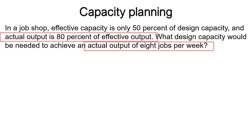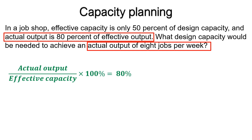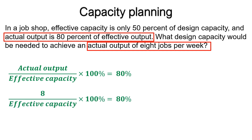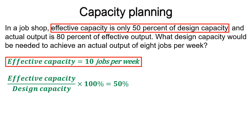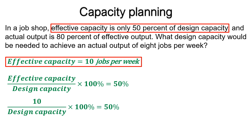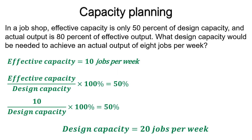We start with the relationship between actual output and effective capacity. The actual output divided by effective capacity, multiplied by 100, equals 80%. Substituting the actual output of 8 and solving gives an effective capacity equal to 10 jobs per week. Now, using the relationship between effective and design capacity: effective capacity divided by design capacity, multiplied by 100, equals 50%. Substituting the effective capacity of 10 and solving gives a design capacity equal to 20 jobs per week.